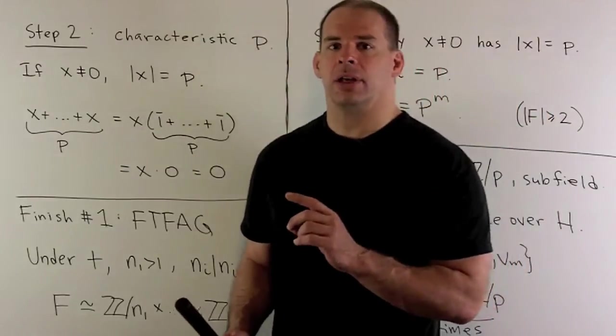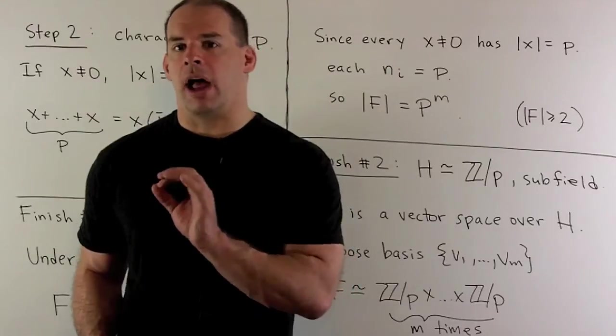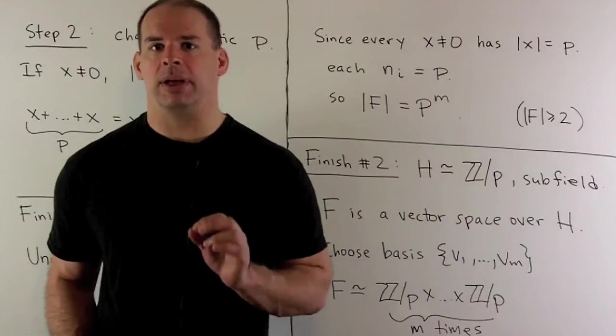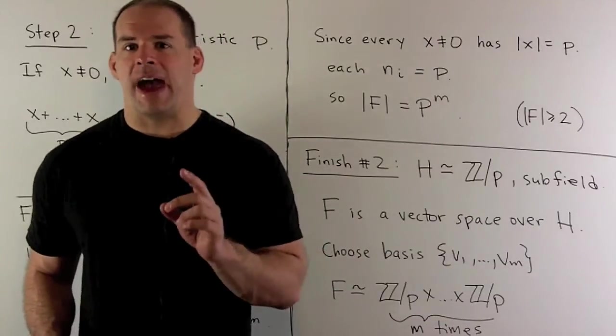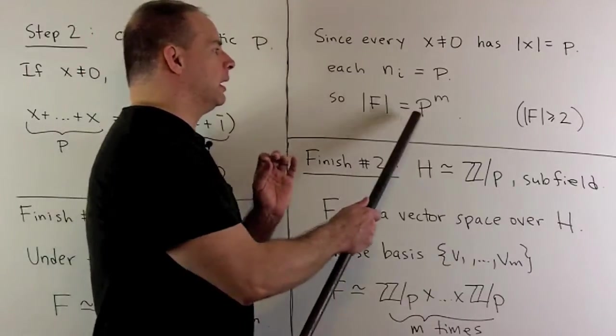Now, in our case, there's not going to be much we can do with these factors. For our elements, the orders are either one or p, which means the only factors that I can have are going to be Z mod p. If I have m factors, that means the number of elements that we have in our field is going to be p to the m.